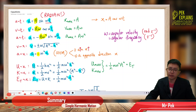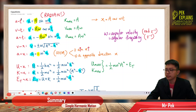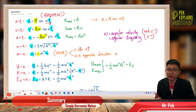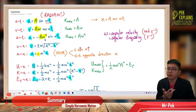In this third part on simple harmonic motion, I want to summarize all the important equations we have learned. The first is the displacement-time equation: x = A sin(ωt). Then we have the velocity-time equation: v = Aω cos(ωt). And the acceleration-time equation: a = −Aω² sin(ωt).